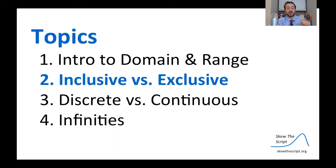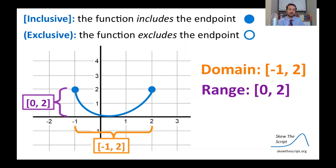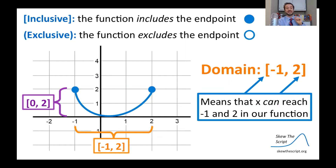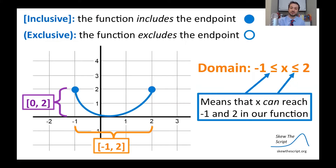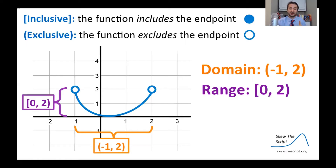We can refine our discussion of domain and range by talking about inclusivity versus exclusivity. When we have a filled-in endpoint, the function is inclusive — it includes the endpoint. An empty dot means the function is exclusive — it excludes the endpoint. In this case we have domain from negative one to two and range from zero to two. The two endpoints are filled in, so it's an inclusive function, meaning x can reach negative one and two.